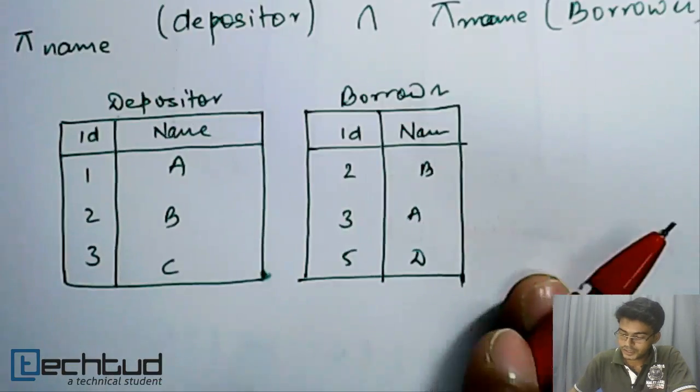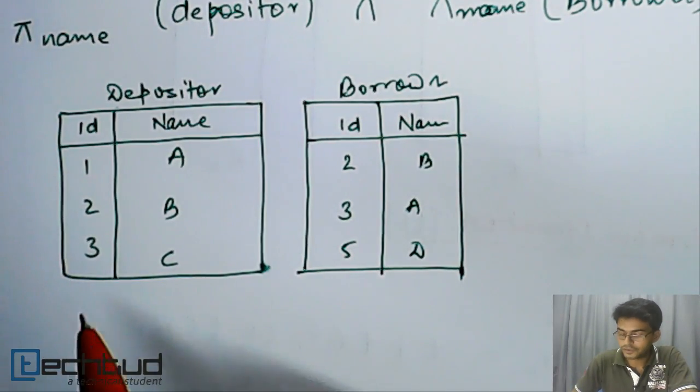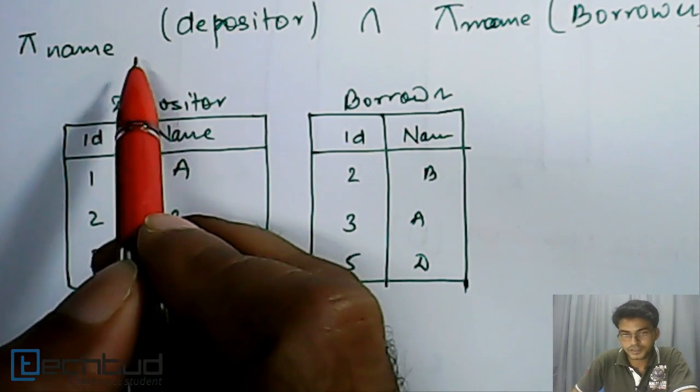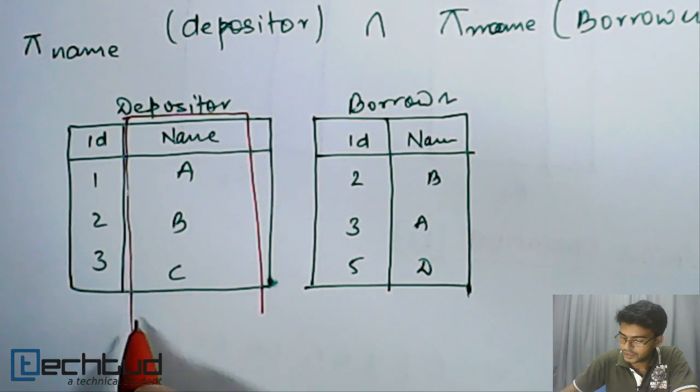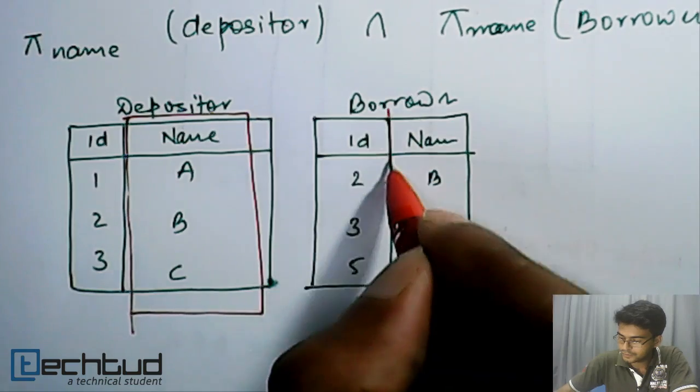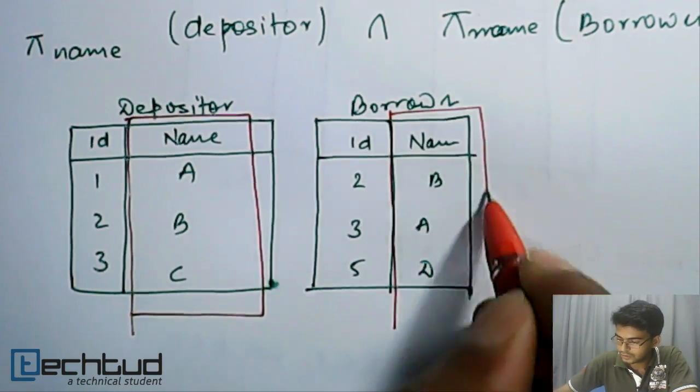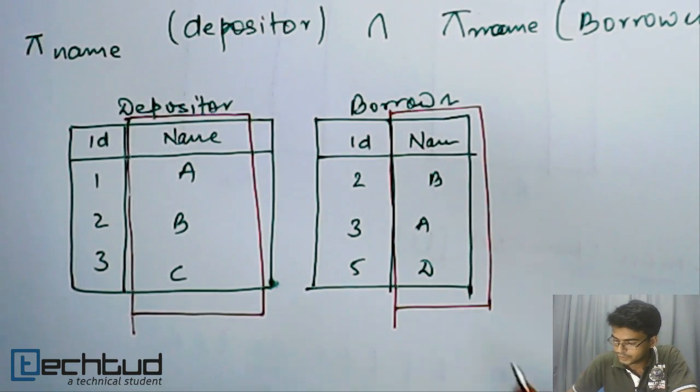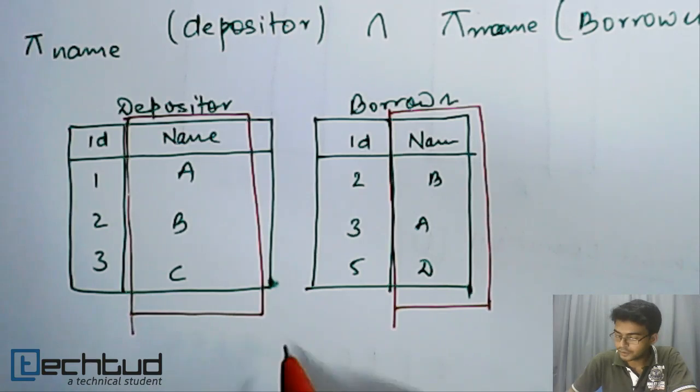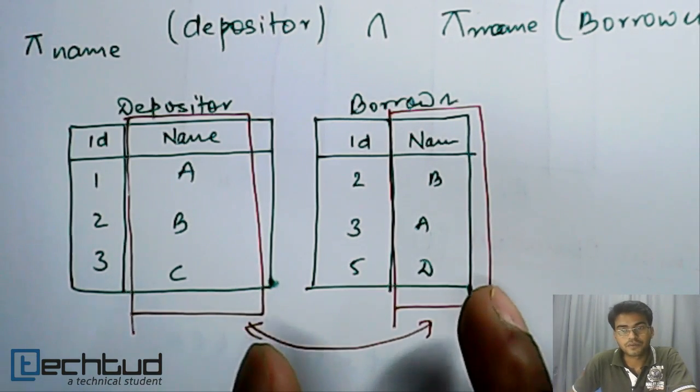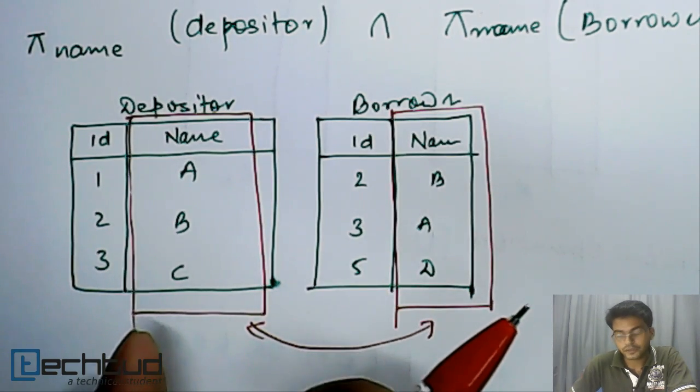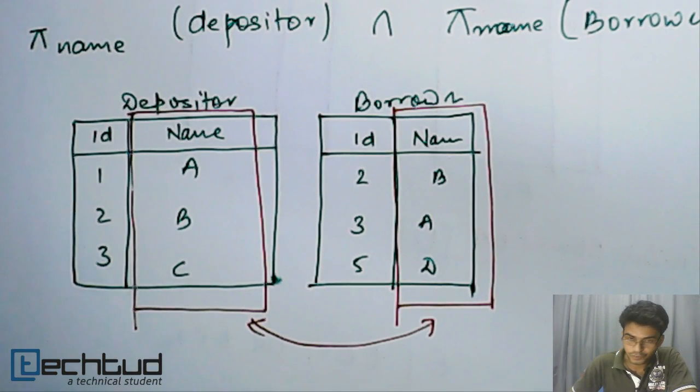Then what we will do? We will first of all project this. So project means we will just consider this—we will remove ID from our concentration or from our scope. Then from these two, these two are now our table, and from these two we will choose only those names which are common to both. So what will be the resultant result? It will be A and B.